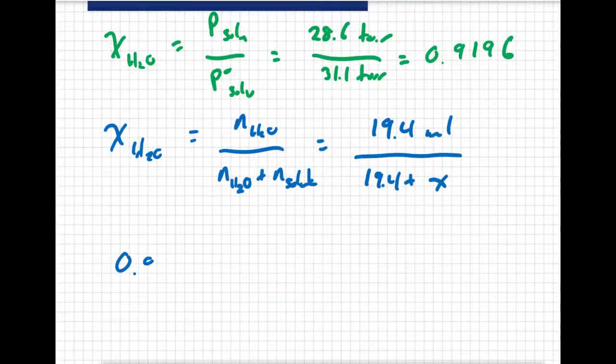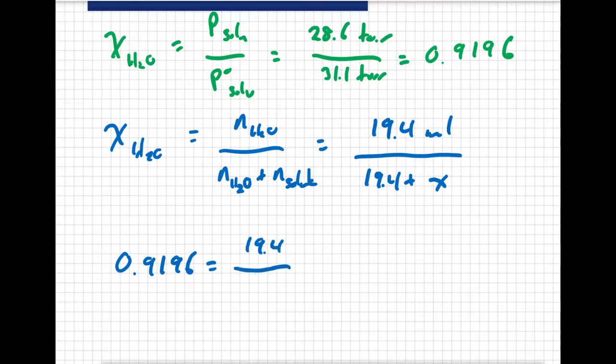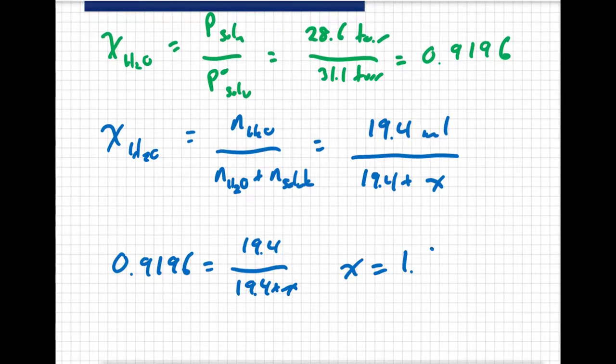So 0.9196 equals 19.4 all over 19.4 plus x. x equals 1.696 moles of solute.